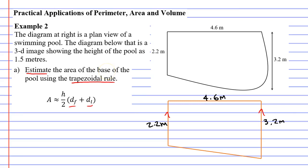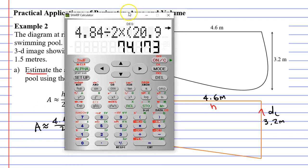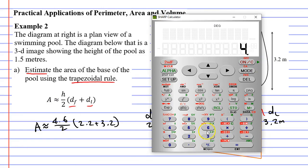Remembering that the two sides parallel to each other are the sides inside the brackets. In this formula they use D with a subscript of F and D with a subscript of L — that stands for the distance of the first line and the distance of the last line. The 4.6 metres represents the height, because the height is the distance between the two parallel sides. To find the area — notice it says approximately equal to — we go h over 2, so 4.6 over 2. Let's work this out on the calculator.